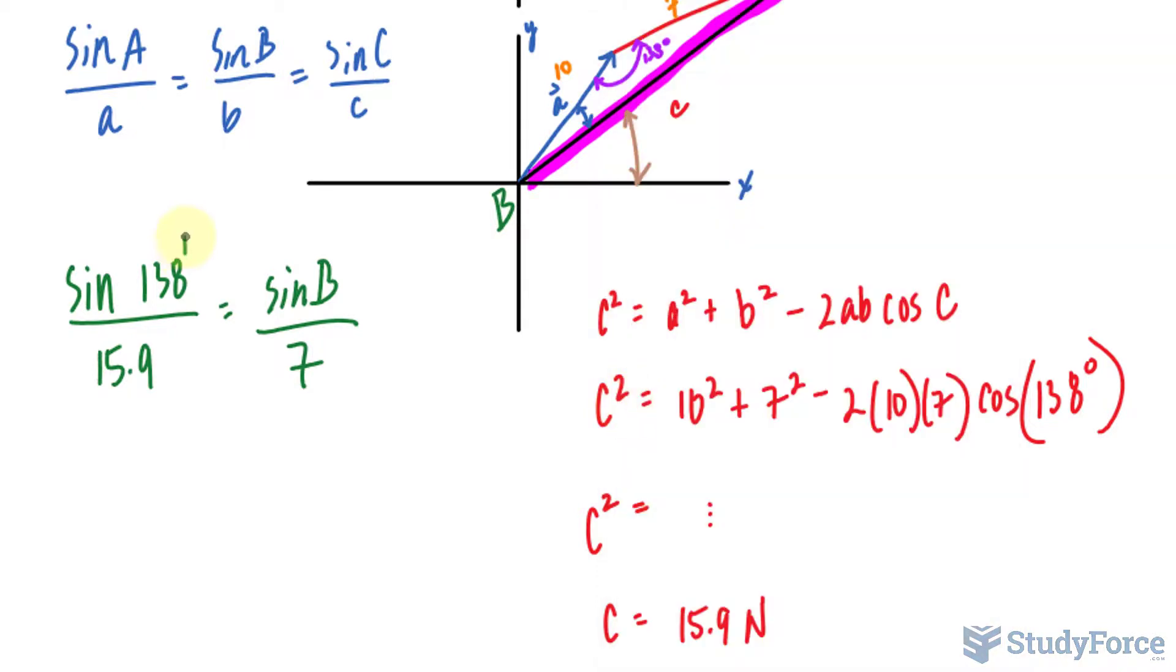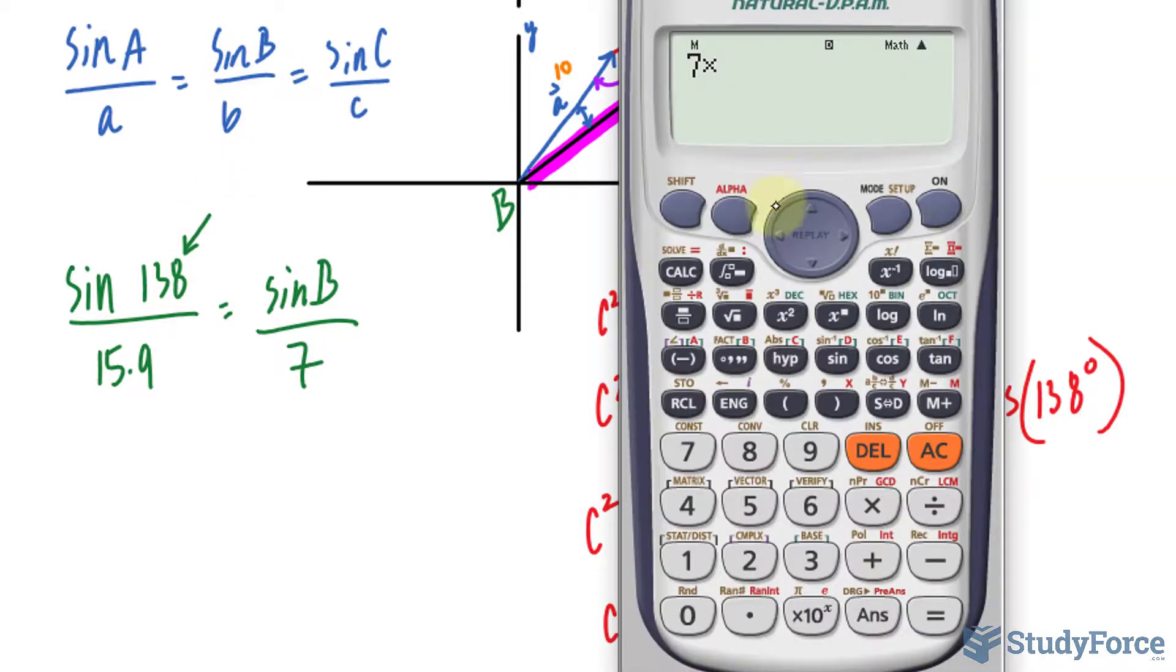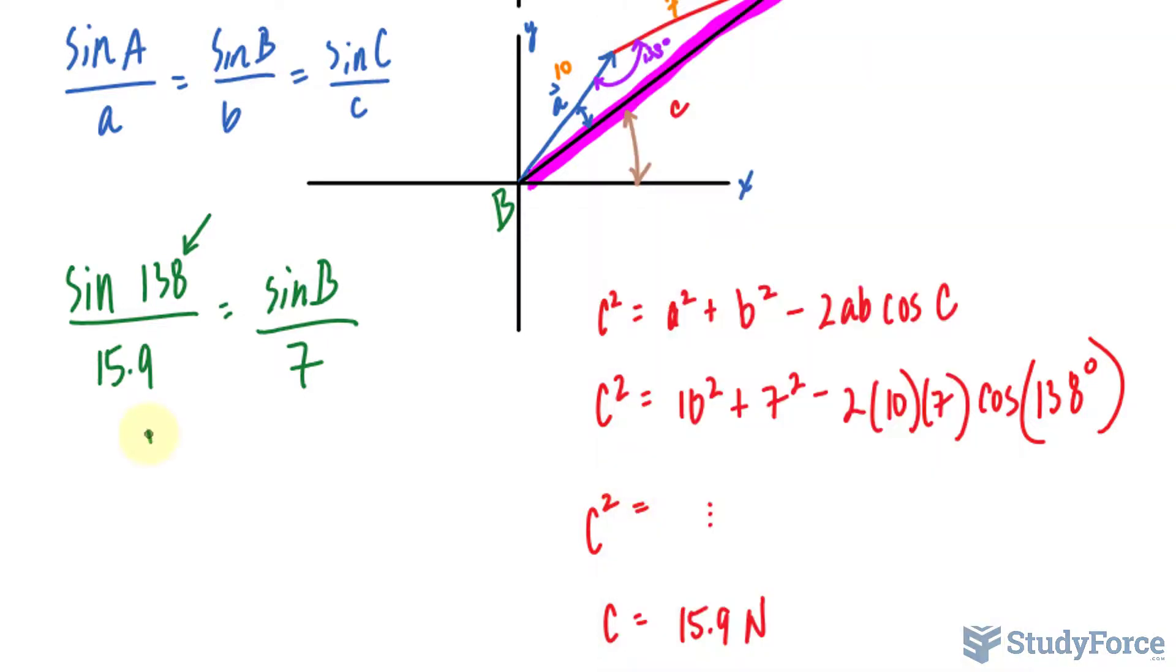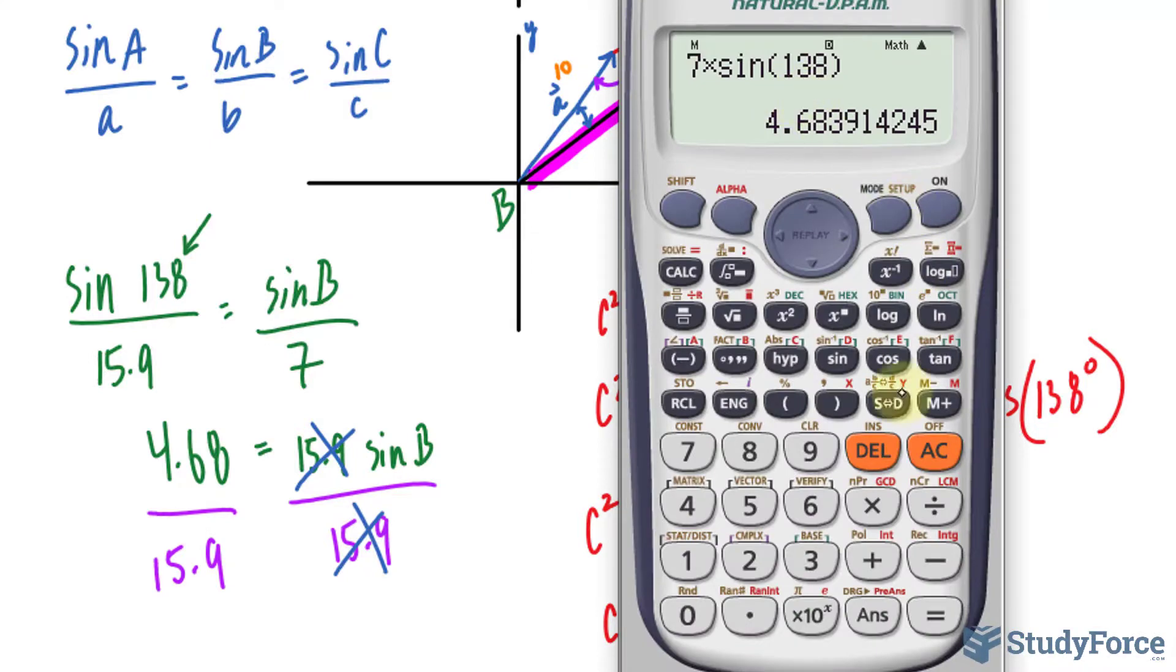7 times this value. Make sure that your calculator is in degrees. Sine 138. That gives us 4.68, is equal to 15.9 times sine B. We divide both sides by 15.9. And that cancels out. So the value on our screen divided by 15.9. Now we take sine inverse of this value. Sine inverse of the value we just calculated, and it's 17.1.